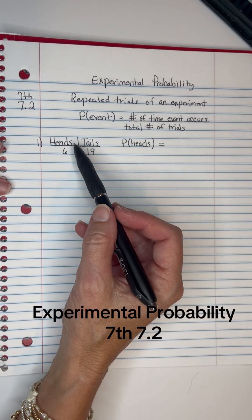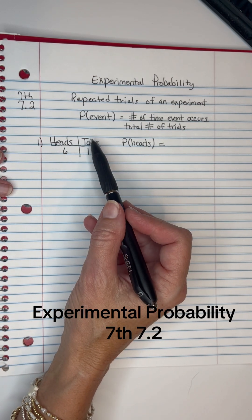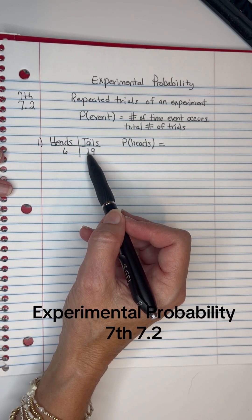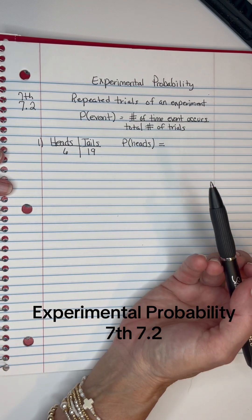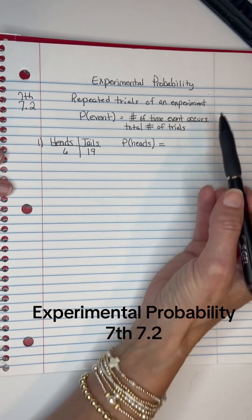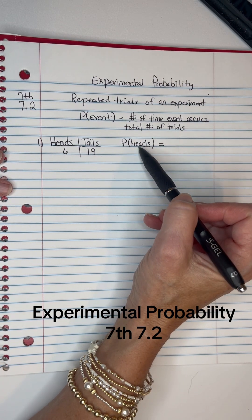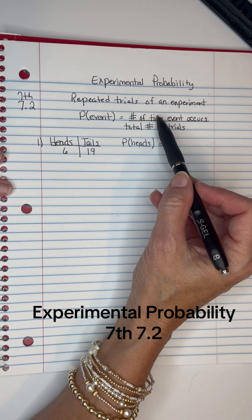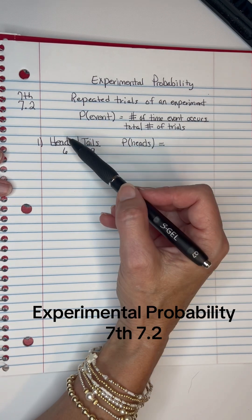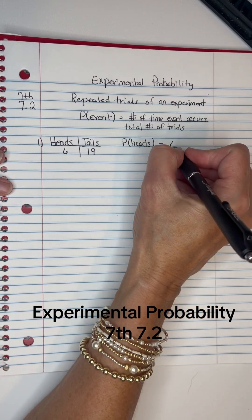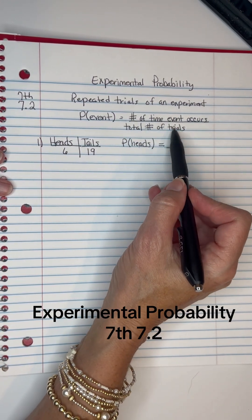Let's say that a person did an experimental probability and they got six heads and they got 19 tails. They want to know the probability of getting heads out of the experiment. So it's going to be the probability of the event — getting heads when spinning it — which is the number of times the event occurs. There were six heads, so six goes on top, divided by the total number of trials.